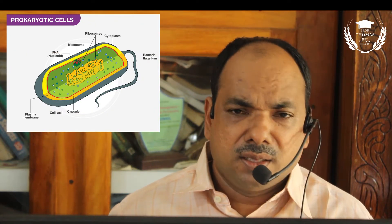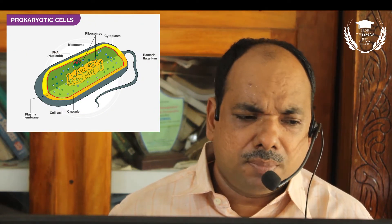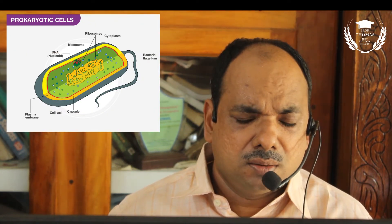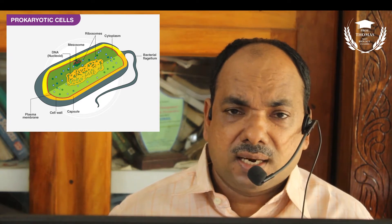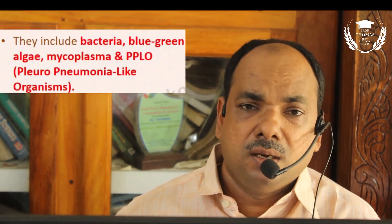Prokaryotic cells have no membrane-bounded organelles. The nucleus is called incipient nucleus, or in bacteria the nucleus is called genophore, which lacks a nuclear membrane and histones. Membrane-bounded organelles are absent, but ribosomes are present.